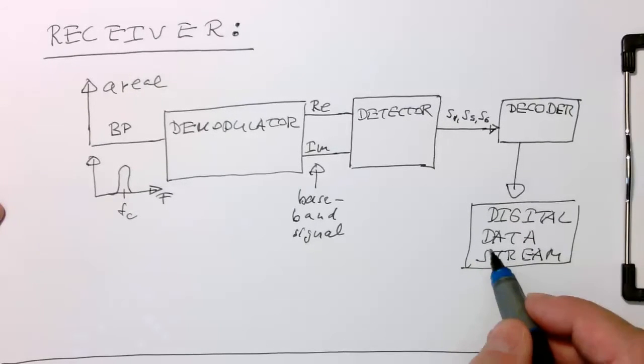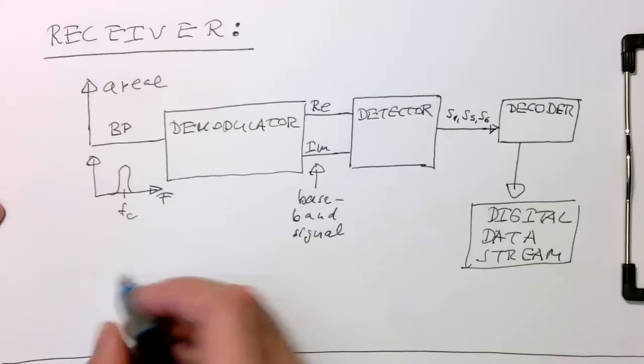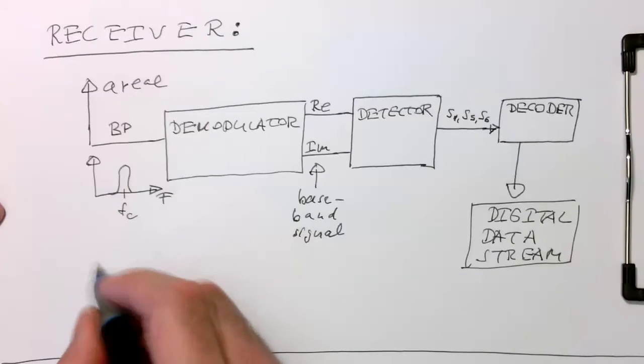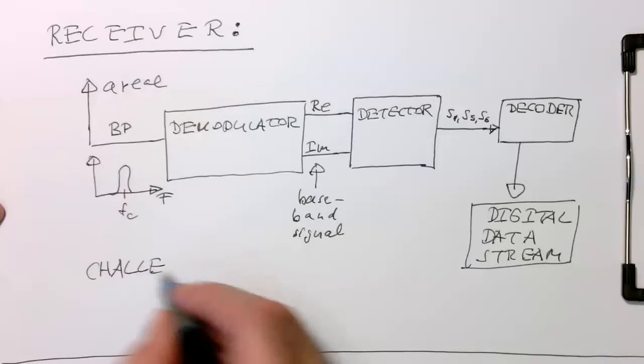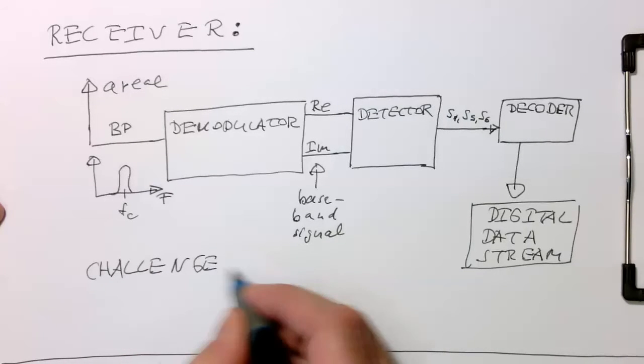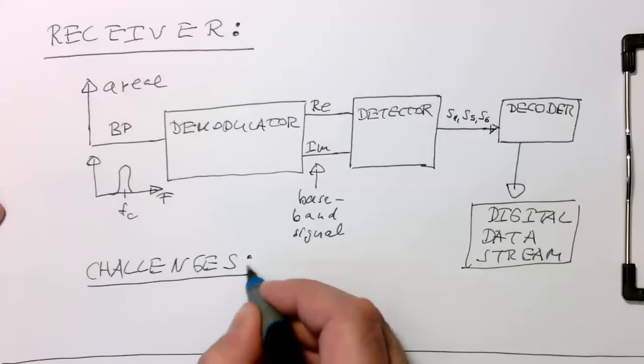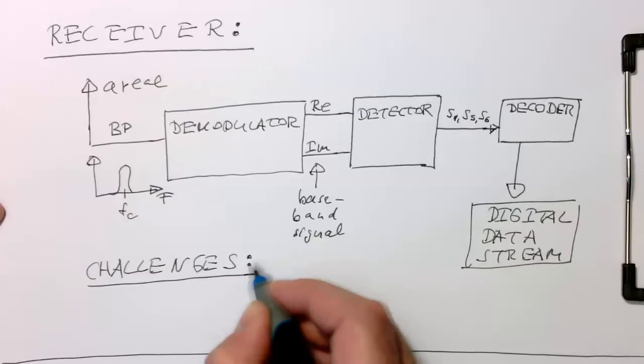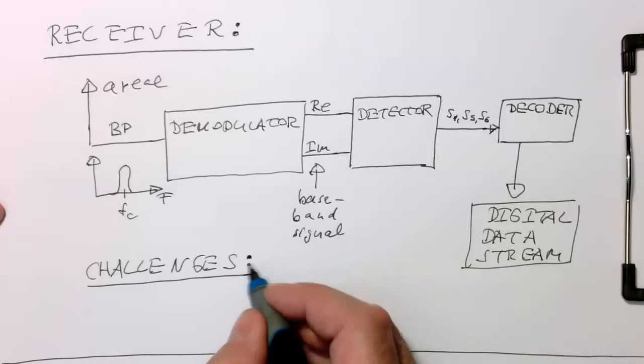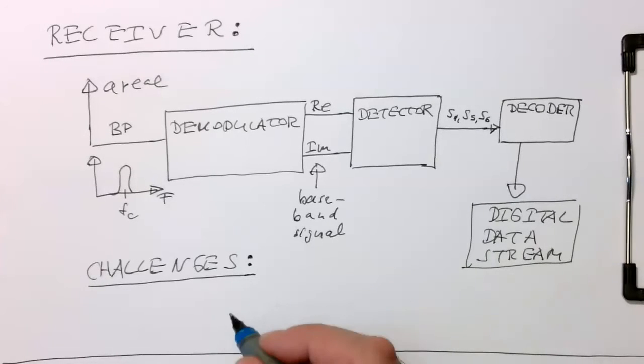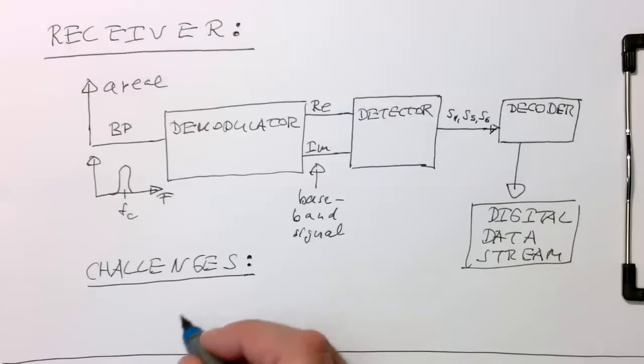So the question is now, which challenges arise here? There are two challenges here, and I'm just giving examples, because there are obviously many more. But these are the two main challenges.